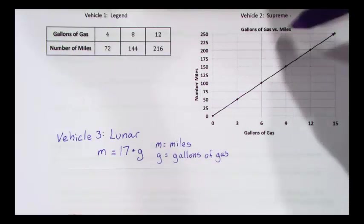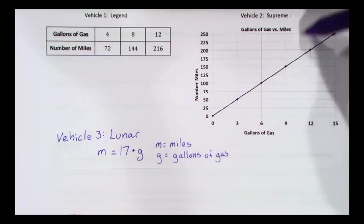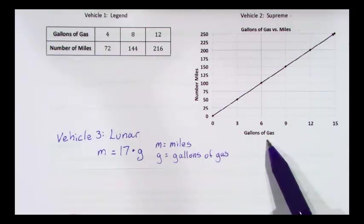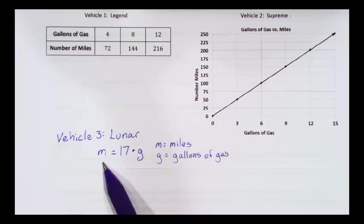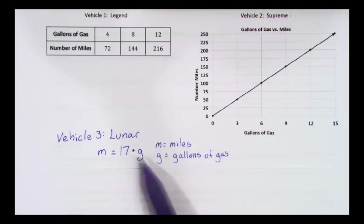In the graph, our title is gallons of gas versus miles, and we're comparing gallons of gas to the number of miles. And in our equation, we have the number of miles equals 17 times the number of gallons.